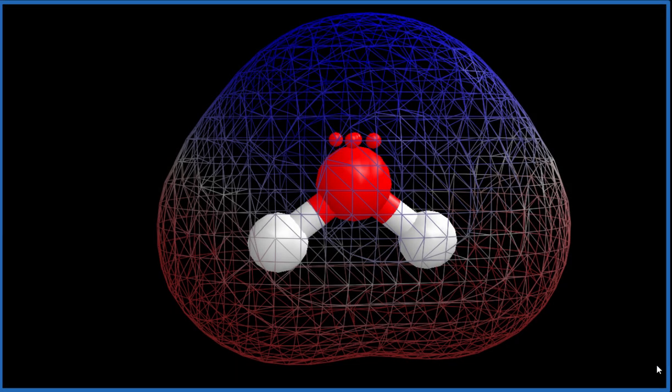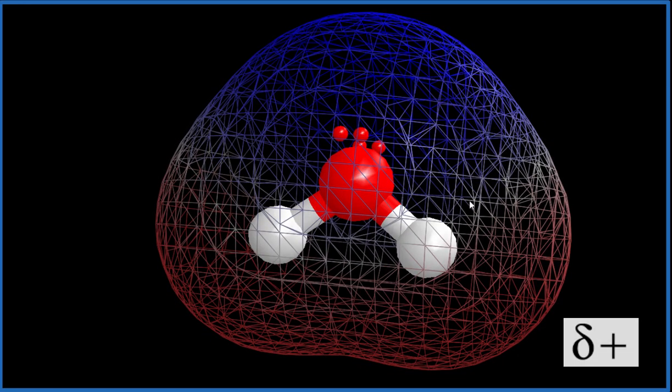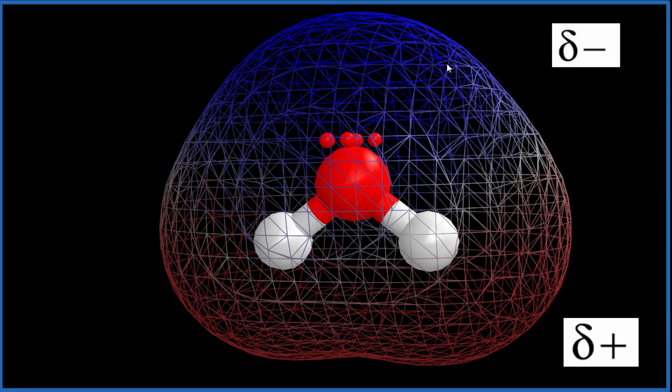So if we look at the surface of the molecule, the electrostatic potential, that's going to show us where we have more of a positive charge and a negative charge. So the hydrogens there on the bottom, they experience a little bit more positive. And then on the top where we have these lone pairs, this is a more negative area.